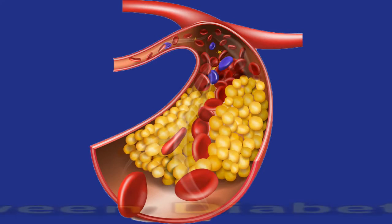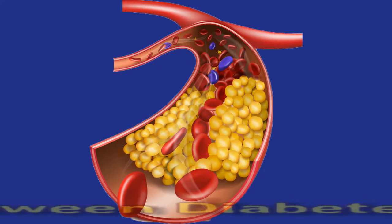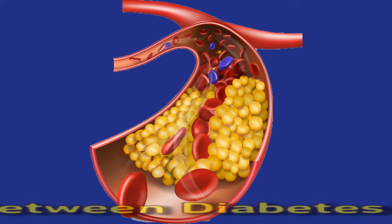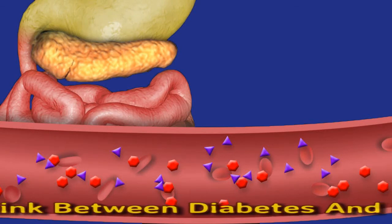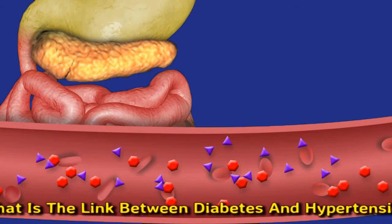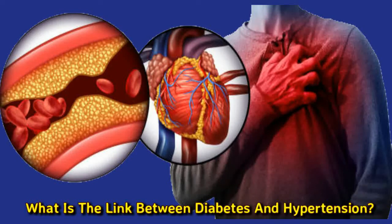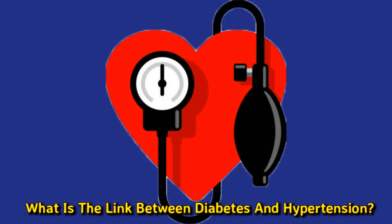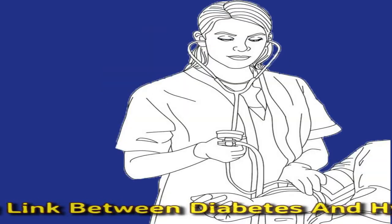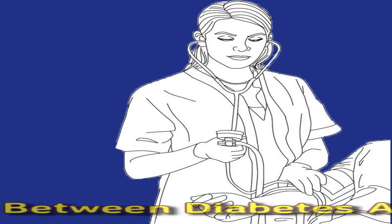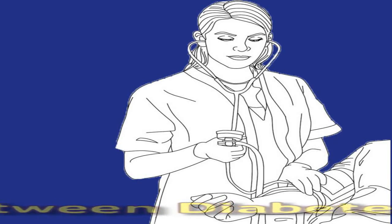What is the link between diabetes and hypertension? High blood pressure or hypertension often occurs alongside diabetes and obesity together. These conditions fall under the umbrella of metabolic syndrome. People with metabolic syndrome are at an increased risk for cardiovascular diseases. Hypertension and diabetes share a number of common causes and risk factors. A person who has one condition is at an increased risk of developing the other, and having both conditions may worsen each.